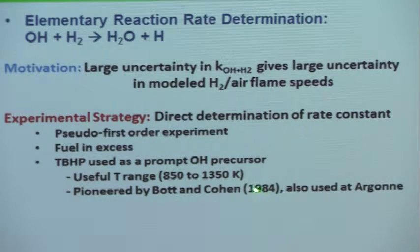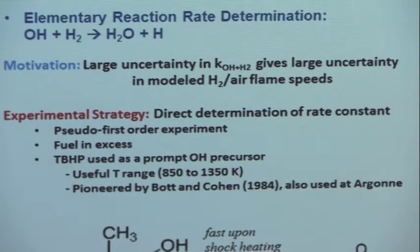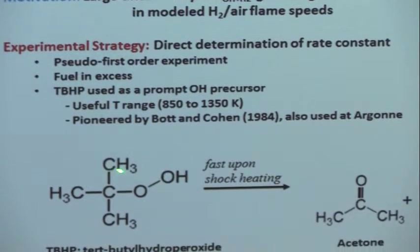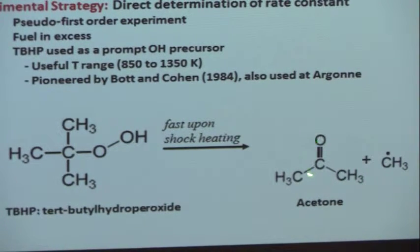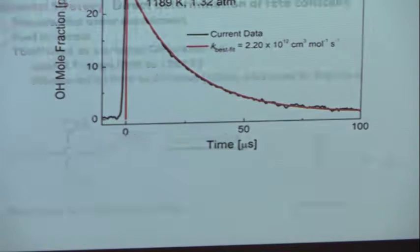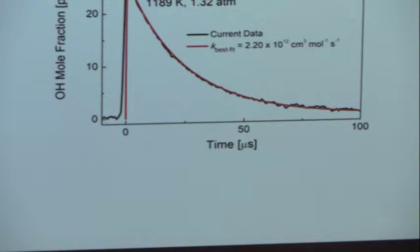This method was first done by Baughcum and Cohen and has been used at Argonne National Laboratory. The basic idea is that tert-butyl hydroperoxide is structured so that there's an OH dangling with a fairly stable residual molecule. When we heat it, this bond breaks and we have the residual molecule plus a little methyl and some OH. We start with an excess of hydrogen — maybe 25 ppm of OH produced by TBHP. The OH reacts only with the hydrogen, which is nearly constant. By monitoring the decay rate of OH, you get an essentially exponential process — a pseudo-first-order reaction rate experiment.